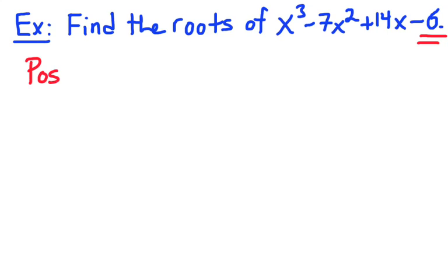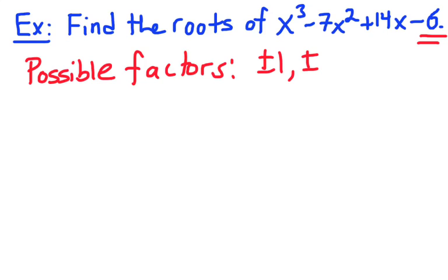So the possible factors are plus or minus 1, plus or minus 2, plus or minus 3, and plus or minus 6. So those are the factors of negative 6.